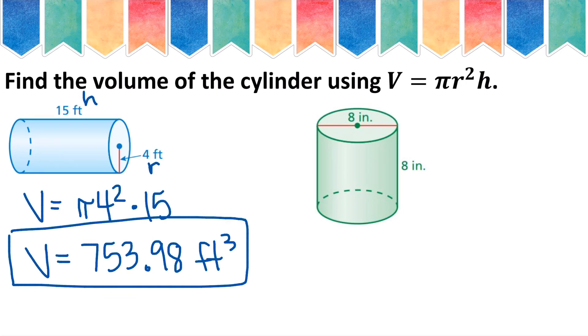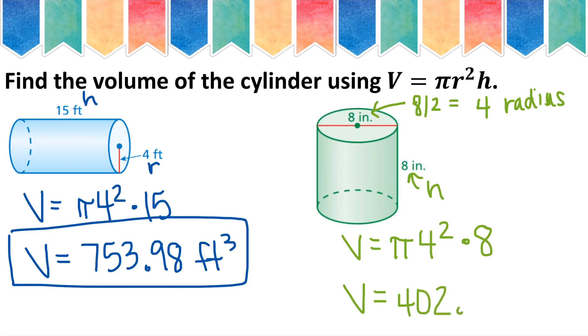For the next problem, 8 is my diameter. So if I divide that by 2, I will get 4 for my radius. And then my height will be 8 inches. So pi, 4 squared multiplied by 8. And I will get approximately 402.12 inches cubed.